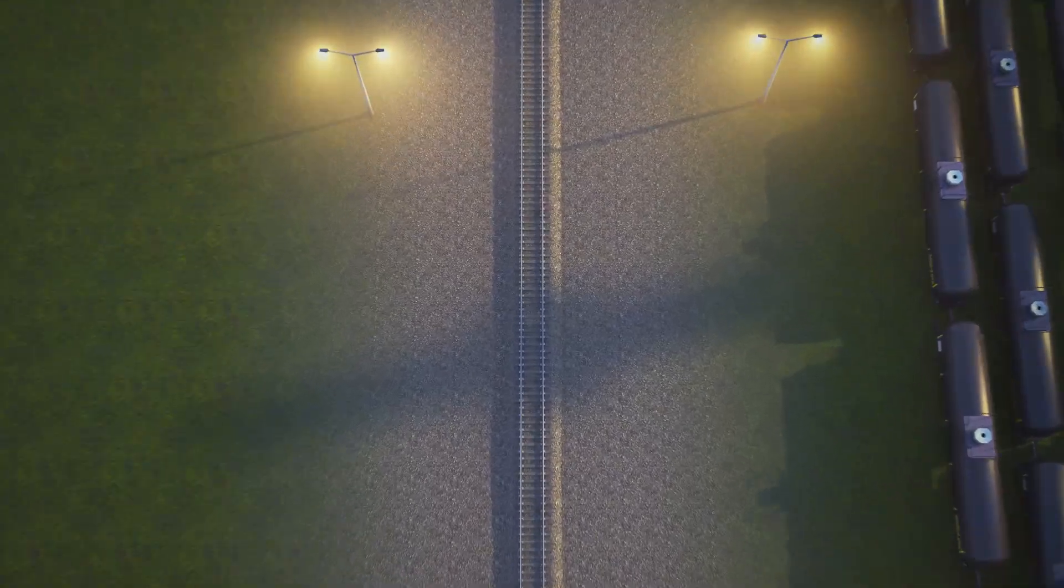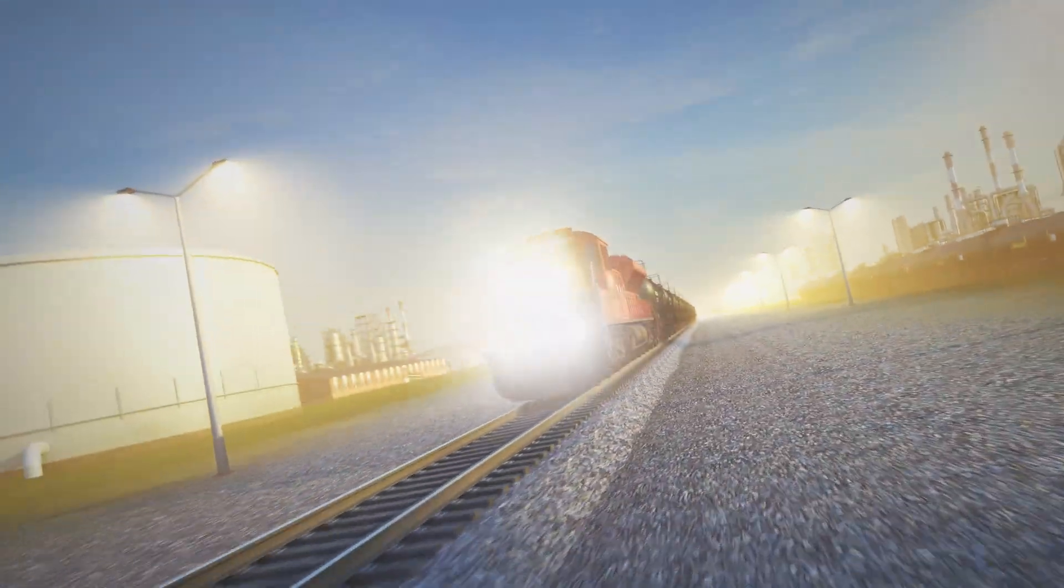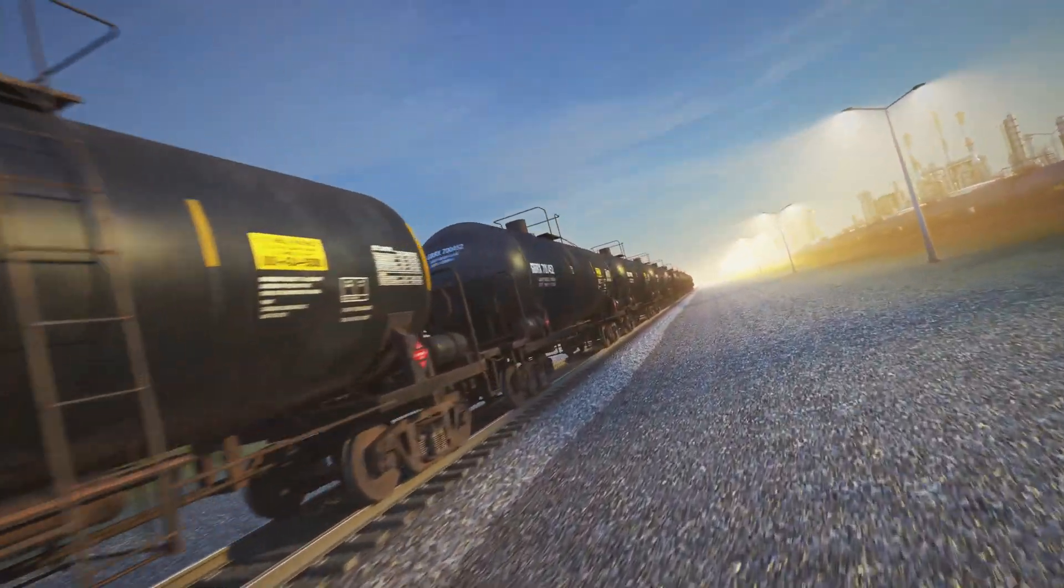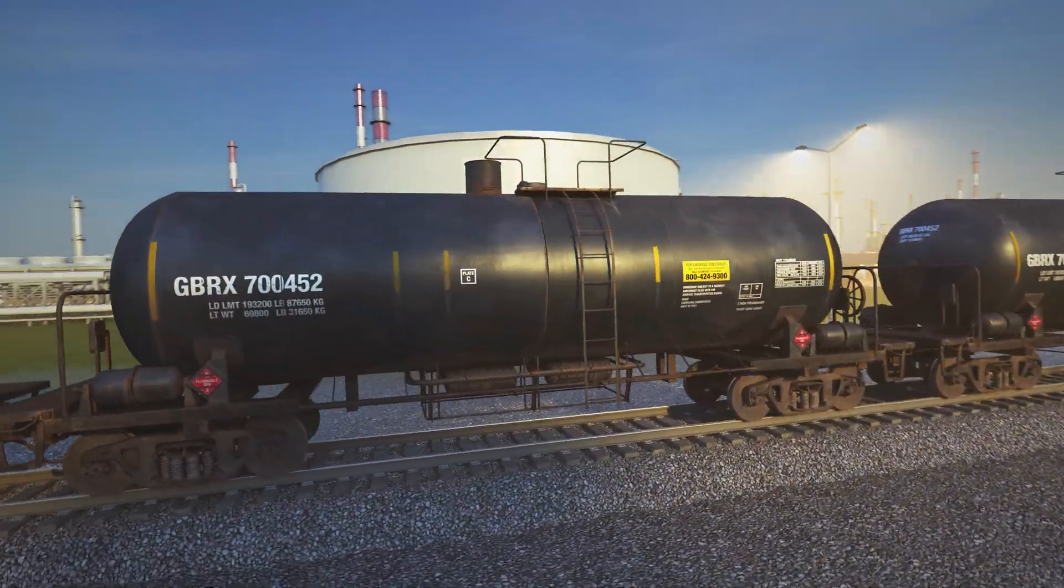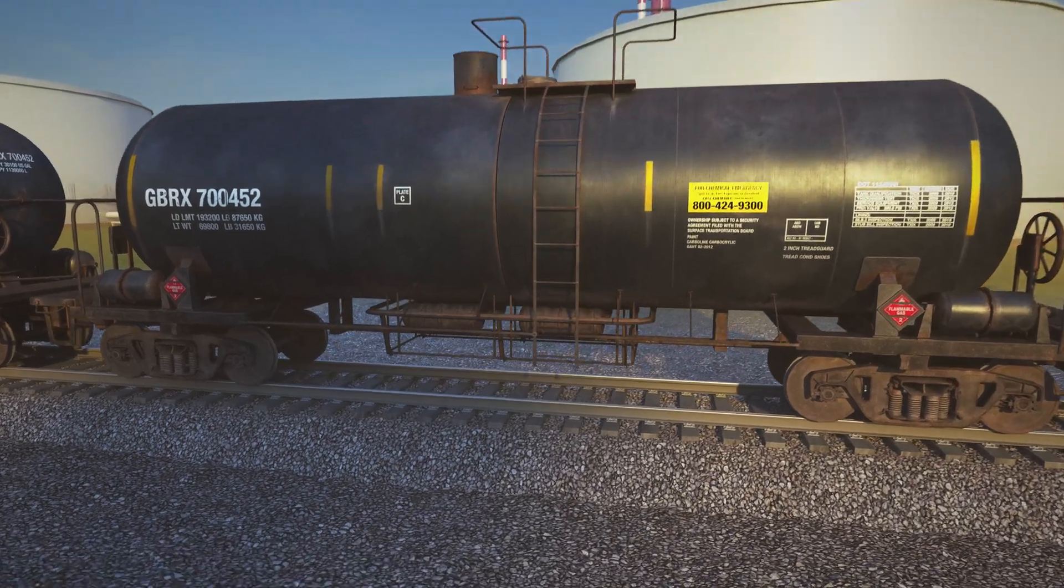The UltraTrackPan composite model is a modular containment system designed to capture leaks, drips, and spills from railroad tanker cars and locomotives.